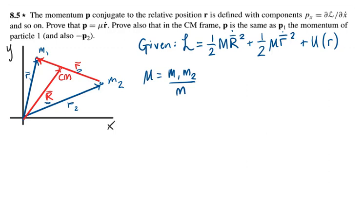So ½ times μ times Ṙ squared, the change in the relative position of the two masses, plus the potential energy, which is associated with the distance between the two masses. We don't need to know the specifics of that right now.